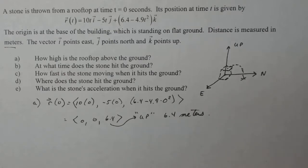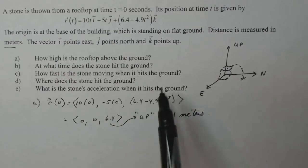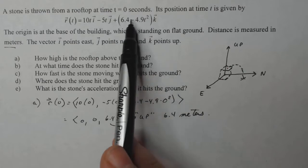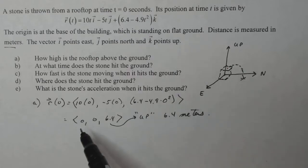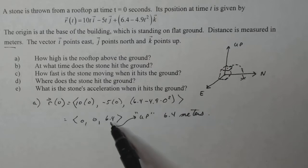Now technically, if I would have really thought about this, I would have just used that component because I know that that means up. But I did the whole vector. So that's the position initially 6.4 meters or 6.4 meters up off the ground.